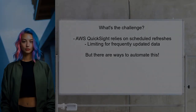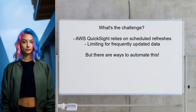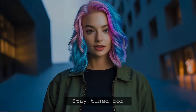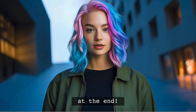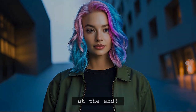So, what's the challenge here? AWS QuickSight typically relies on scheduled refreshes, which can be limiting if your data updates frequently. But don't worry — there are ways to automate this process using scripts and APIs. Stick around, because at the end of this video I'll share a powerful tip that can make your data management even smoother.